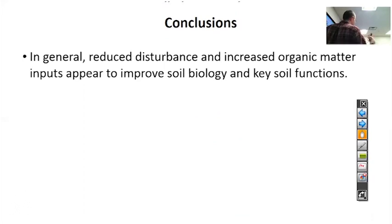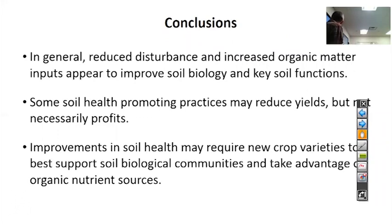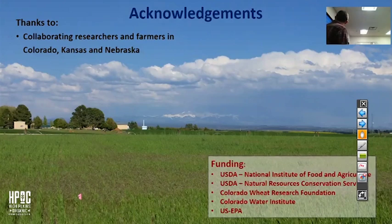In conclusion: reducing soil disturbance and increasing organic matter inputs — via residues, manure, or other sources — generally improves soil biology and a range of key soil functions. Some soil health-promoting practices may reduce yields, at least initially, but not necessarily profits. In conservation tillage, we're actually decreasing costs so profit went up. With cover crops, if we graze them, we can actually increase profits. And with improved soil health achieved at scale or in organic agriculture, we may want to start thinking about new crop varieties that are better able to take advantage of and facilitate the activities of this biological community in soils. I want to thank all the collaborating researchers in Colorado, Kansas, and Nebraska, and all the farmers that worked on this, as well as different funding agencies.